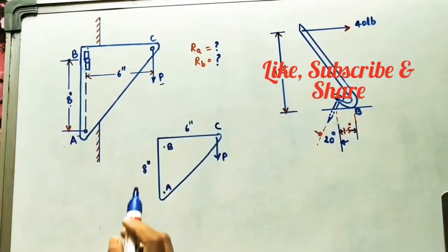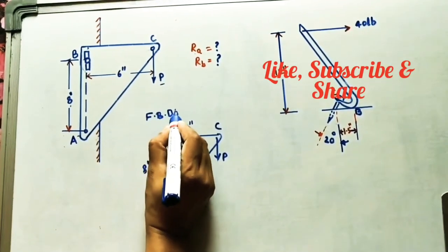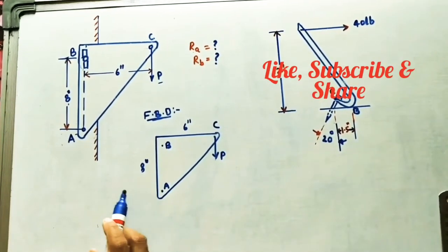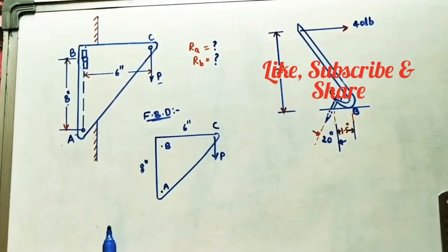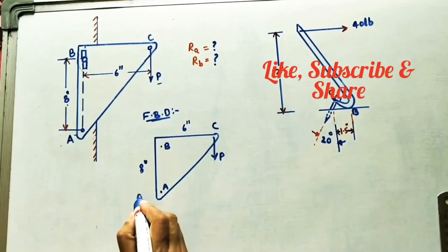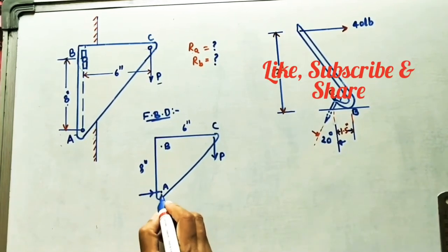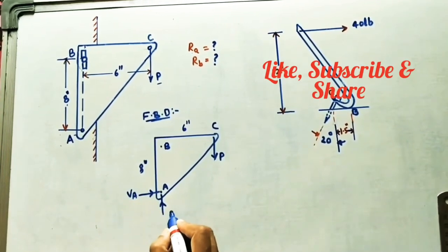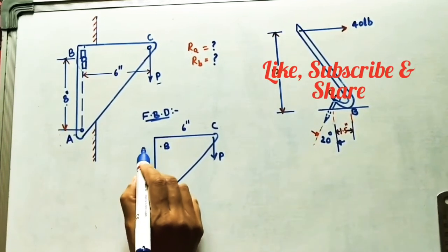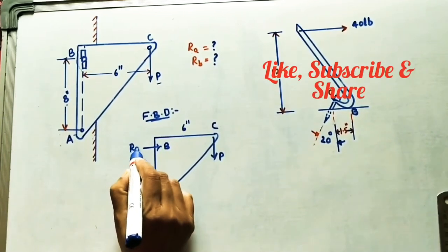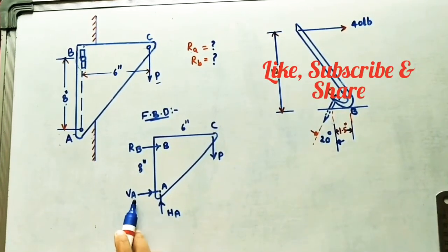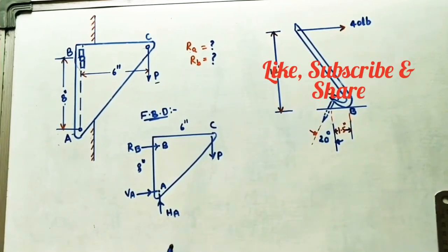Now draw the free body diagram (FBD). The FBD is drawn by removing all contact surfaces and replacing them with reactions at the support points. At hinged point A, there are two force components: vertical VA and horizontal HA. At B, which acts like a roller support, there is one reaction RB. The resultant reaction RA is the root of HA squared plus VA squared.